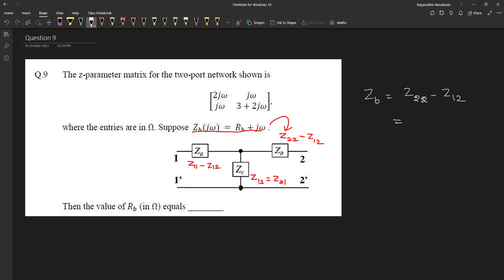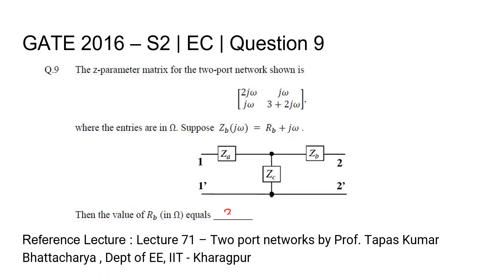Zb = z22 - z12. So, from the matrix, this equals 3 + 2jω - jω, which equals 3 + jω. And it is given that the value of zb = rb + jω. Therefore, the value of rb = 3Ω. The answer is 3Ω.